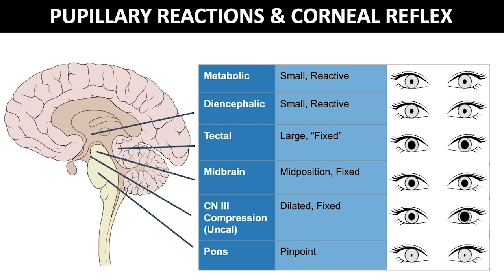The corneal reflex involves cranial nerves 5 and 7 and can be measured by lightly touching the cornea with a cotton swab or drop of sterile saline. The corneal touch should cause the patient to reflexively blink, indicating that the pons and midbrain are intact. Loss of the corneal reflex is a poor prognostic sign in coma.